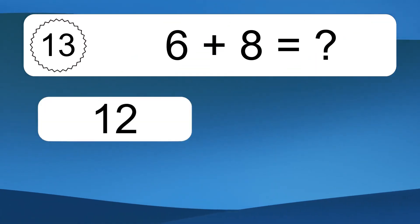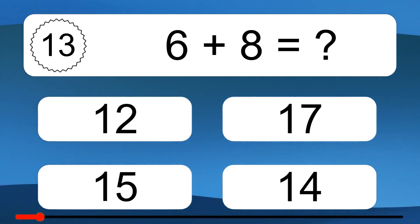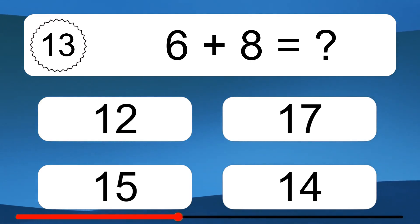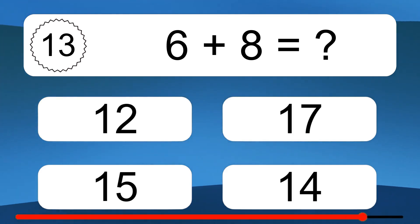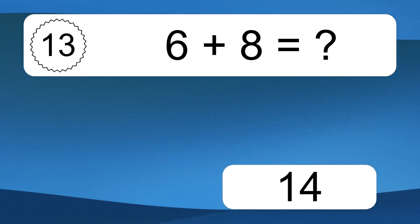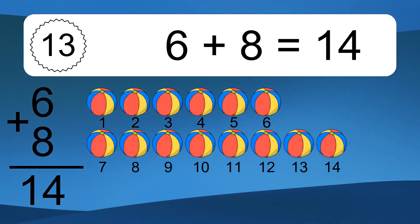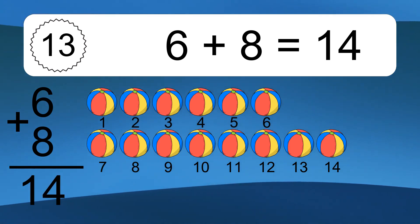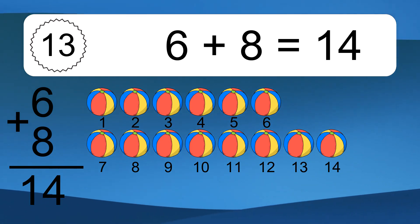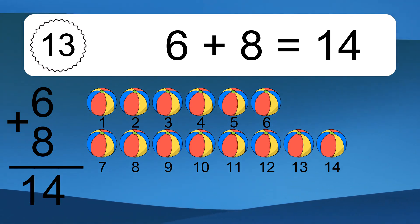6 plus 8 equals what? 6 plus 8 equals 14. Let's count it. 1, 2, 3, 4, 5, 6, 7, 8, 9, 10, 11, 12, 13, 14.